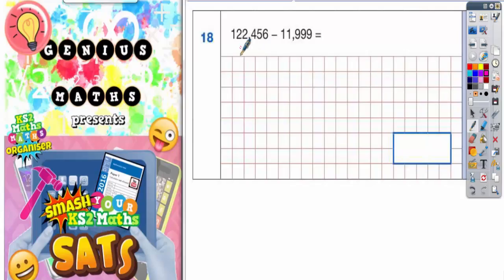Well, it might be easier to actually put our commas in first before we do the column method and make sure our commas are lined up and that will help us line up all the rest of the digits. So 122,000 would go before the comma, 456 would go after the comma. 11,999: So 11,000 before the comma, 999 after the comma.